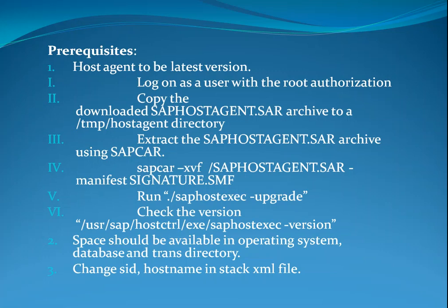Next, check the version using: /usr/sap/hostcontrol/exe/saphostexe -version. Next, space should be available in the operating system and database at the trans directory. Third, change the seed hostname in the StockXML file.